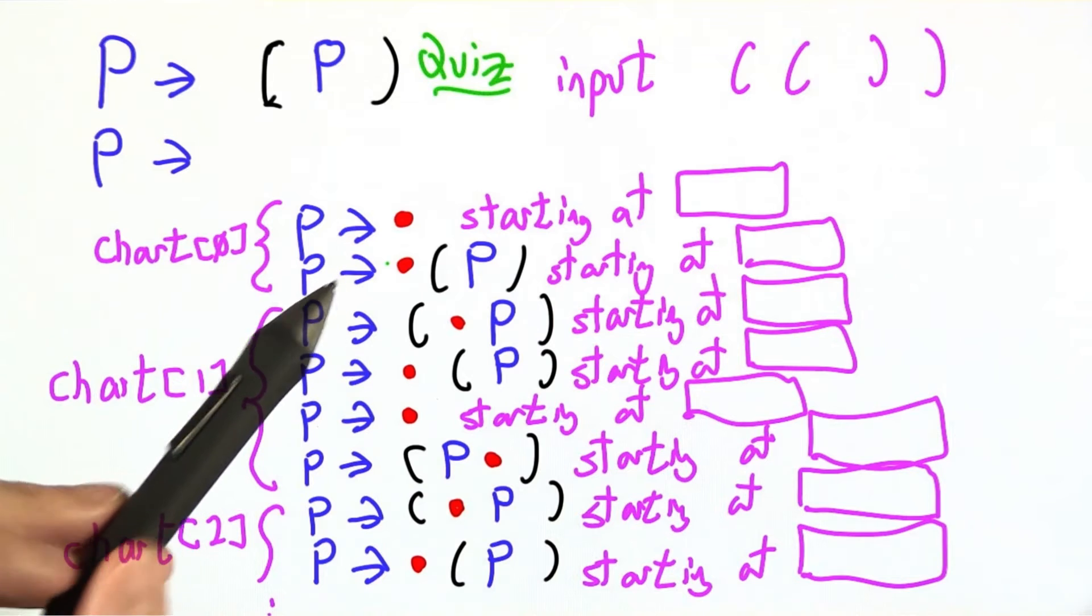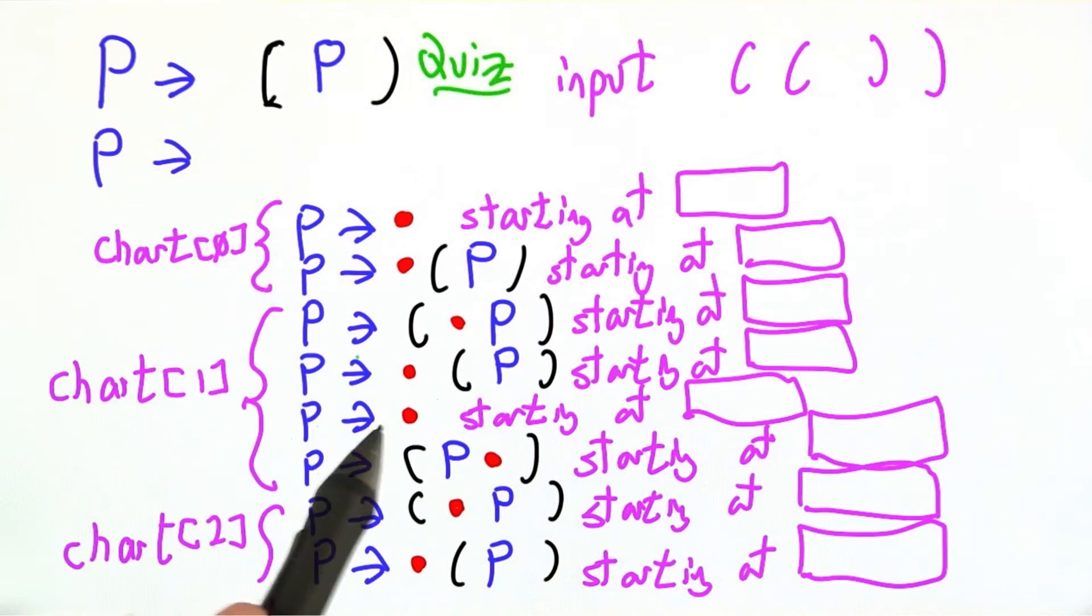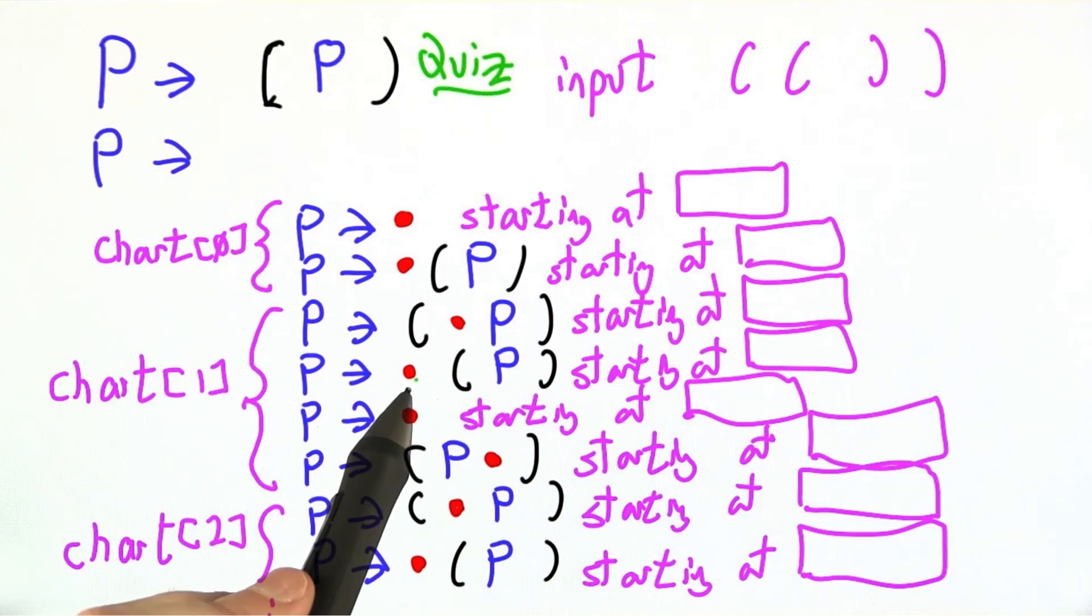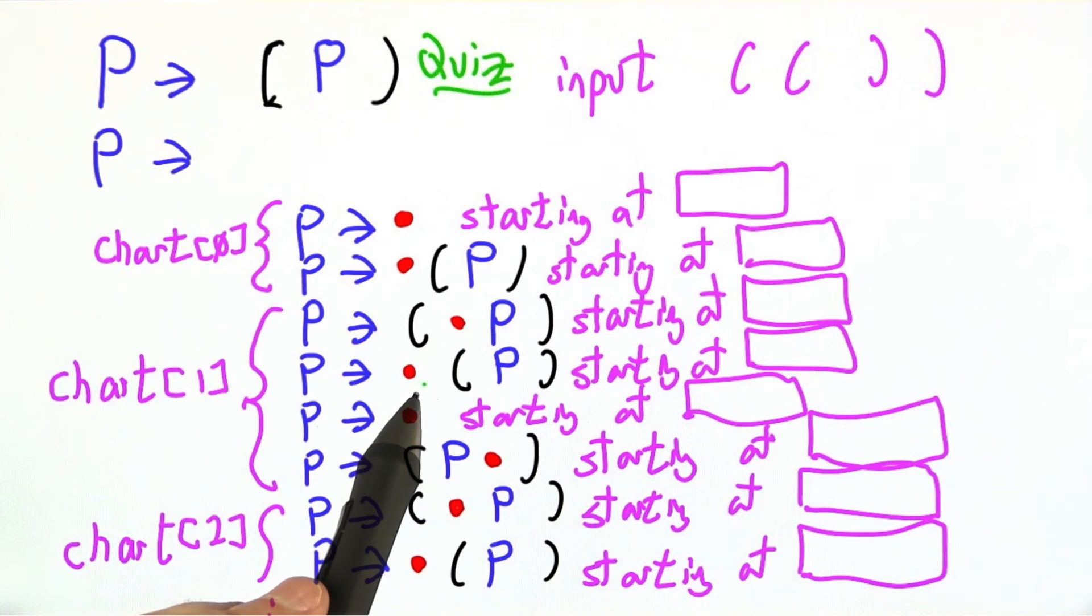Another way to think about that is let's say that we're in a particular state like this one, P goes to dot, open, P close. How many tokens must there have been beforehand for this to possibly make sense?